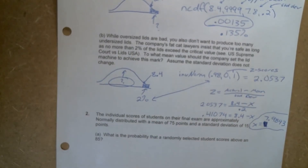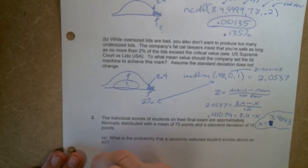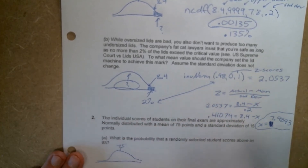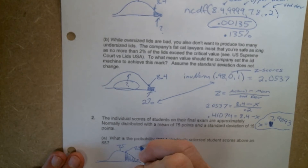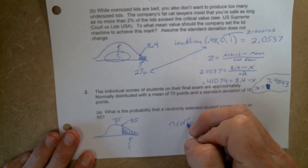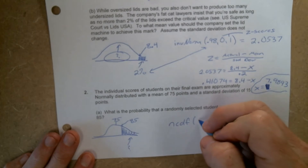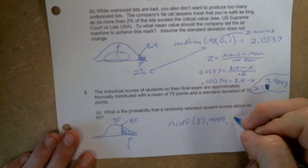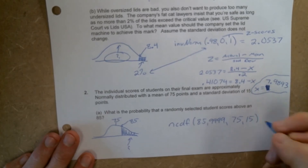Let's take a look at number two. The individual scores of students on their final exam are approximately normally distributed with a mean of 75 points and a standard deviation of 15 points. What is the probability that a randomly selected student scores above an 85? This is another normal CDF question. We've got a curve centered at 75, and we want to know what percent scored an 85 or higher. So that's an NCDF from 85 to 9999 when the mean is 75 and the standard deviation is 15.